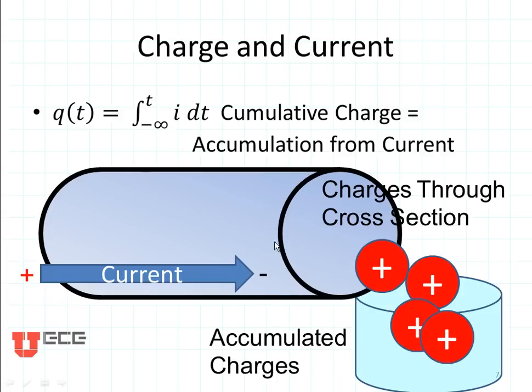So the current from positive to negative voltage goes through a cross section and dumps its charges into something that it can accumulate them, such as a capacitor. And that's going to tell us how much charge we'll have from a particular amount of current.